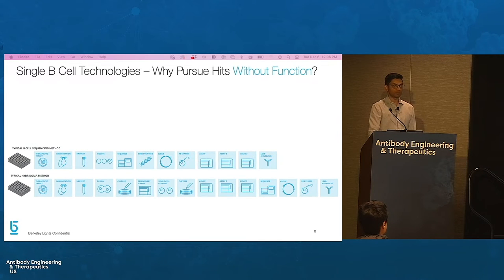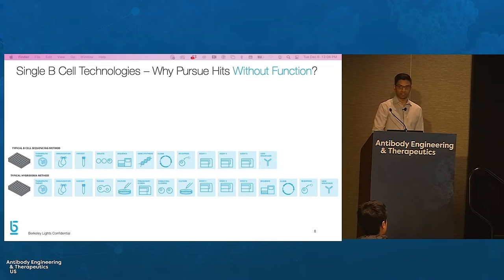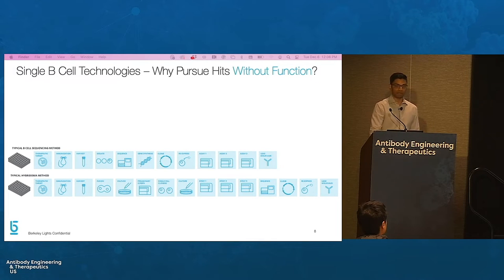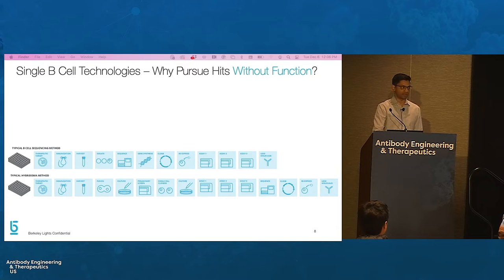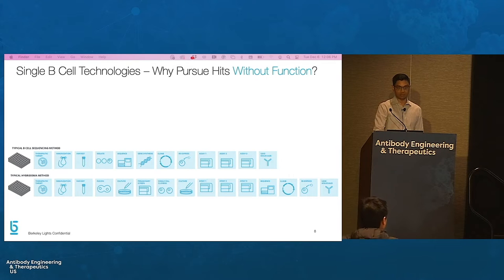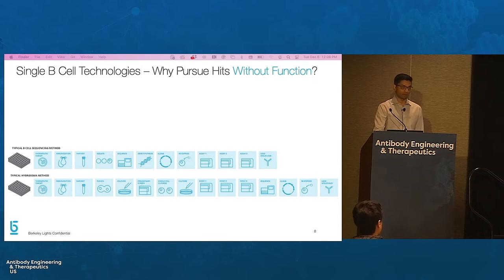Single B-cell technologies seek to access greater B-cell diversity by bypassing the cell fusion step. However, many of these approaches provide little to no functional information, which results in significant time, labor, and cost to sequence, clone, and re-express irrelevant hits that either don't have the correct function or don't bind the correct epitope.